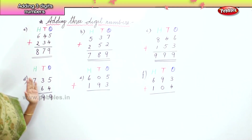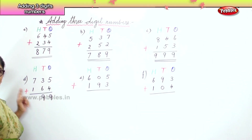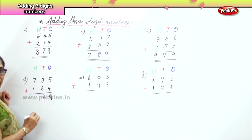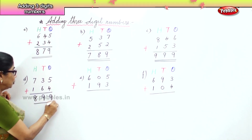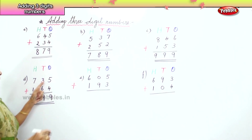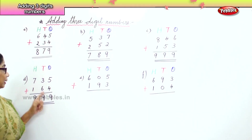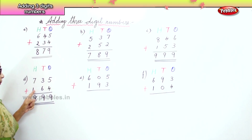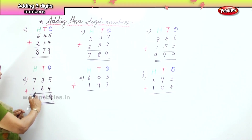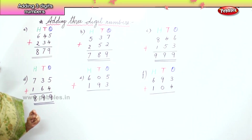Let's go to the hundreds place. You have seven hundred and one hundred. Seven plus one is eight — so that's your answer. What is five plus four? Nine. Six plus three? Nine. Seven plus one? Eight. Adding three-digit numbers.